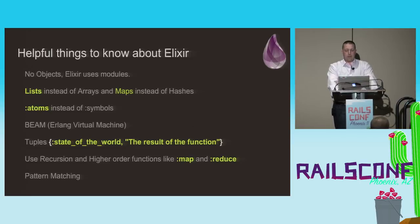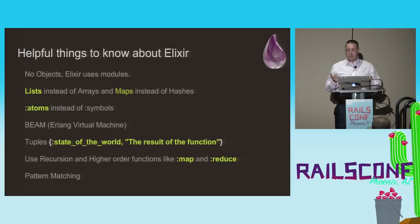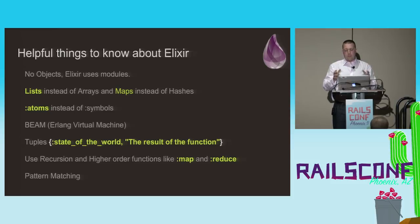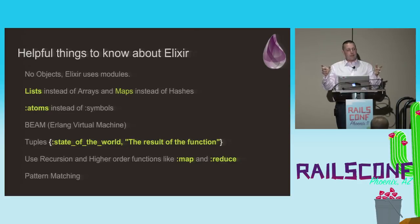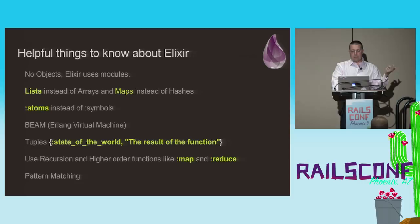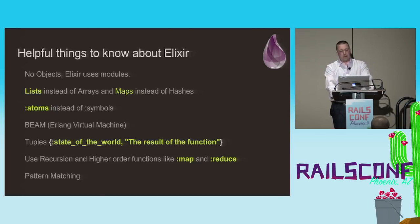Some language-specific concepts that will come up: Elixir uses lists, not arrays; maps, not hashes, although they're very similar. There are no objects — Elixir has modules, and modules package groups of functions together. The Beam is the Erlang virtual machine where all Phoenix and Elixir code is executed. We also have tuples — an ordered collection of elements between curly braces, where the symbol or atom at the front represents the success or fail state of a function call. And in general, there are no for loops or iteration — Elixir favors recursion and higher-order functions like map and reduce.